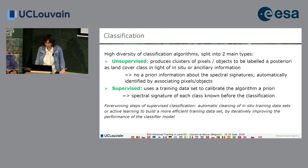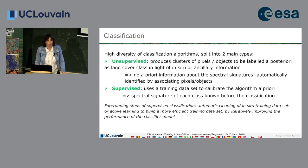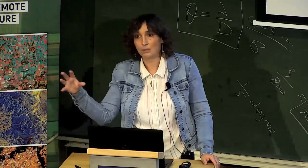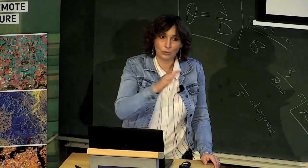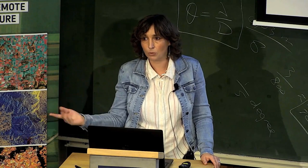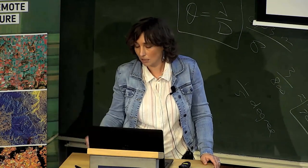Then you have the supervised algorithm, where you use a training dataset to train and calibrate your algorithm a priori, and then you apply this algorithm to all the pixels of your images. For the supervised algorithm, there are preparatory steps on the training dataset — it is cleaned, and there can be iterations between cleaning the dataset, running the algorithm, checking the accuracy, and improving the training dataset, until the output meets your requirements.